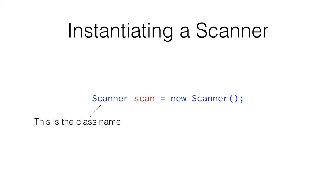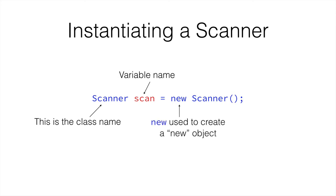So this is the class name, then the variable name. The new keyword is used to create a new object, and the last one is the class name again. Later on I will explain why the class name is there twice, but for now just accept that this is the way that it is.